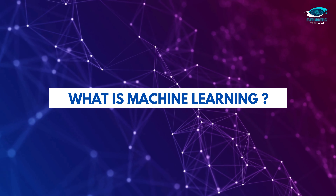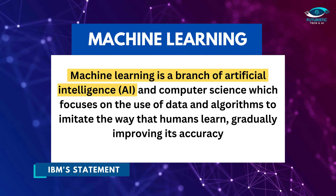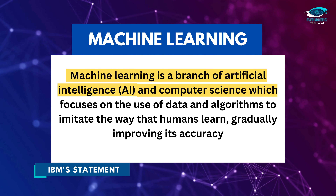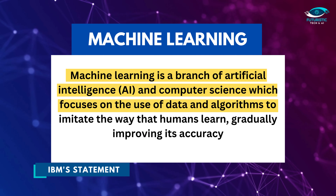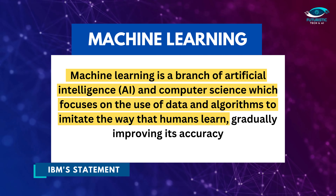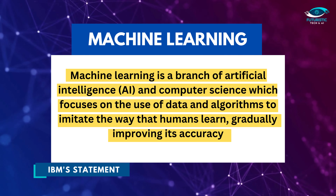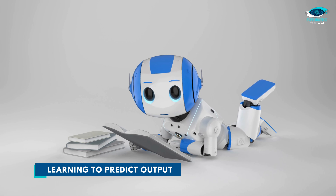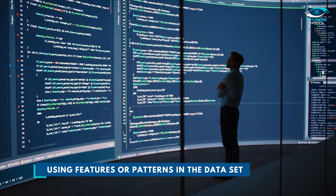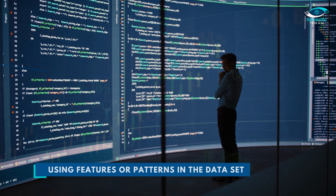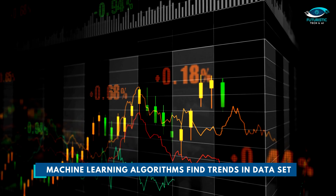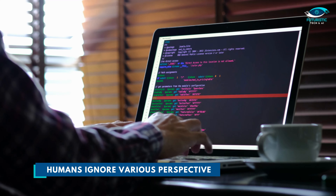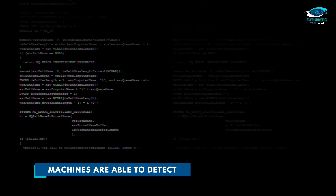What is machine learning? As IBM states, machine learning is a branch of artificial intelligence and computer science which focuses on the use of data and algorithms to imitate the way that humans learn, gradually improving its accuracy. In simpler terms, machine learning is basically learning to predict output using either features or patterns in the dataset. Machine learning algorithms are always finding trends in datasets — sometimes we humans ignore the various perspectives which machines are able to detect.